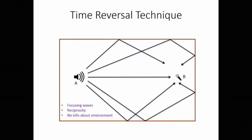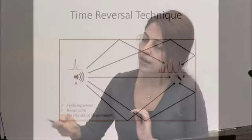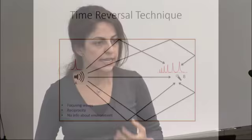Time reversal is a technique for focusing waves, based on a feature of wave propagation called reciprocity. If we send a delta function at point A, what we get at point B is the direct path and all reflections from walls and hard surfaces. If we reverse this signal in time and broadcast it from point B, what we get at point A is the delta function. Synthetic time reversal takes this main idea, but we do not need to broadcast from point B—the broadcasting part is done synthetically. The advantage is we do not need any information about the environment as long as it is not changing.